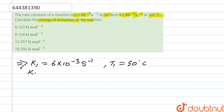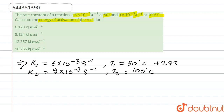And k2 is 9 into 10 to the power minus 3 second inverse at temperature T2, which is 100 degrees Celsius. We convert both temperatures into Kelvin by adding 273, so T1 becomes 323 Kelvin and T2 becomes 373 Kelvin.